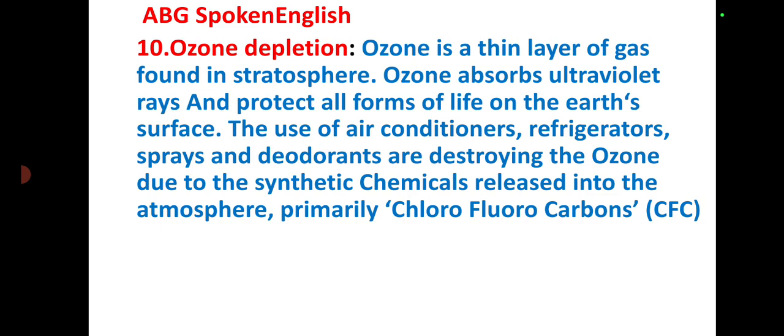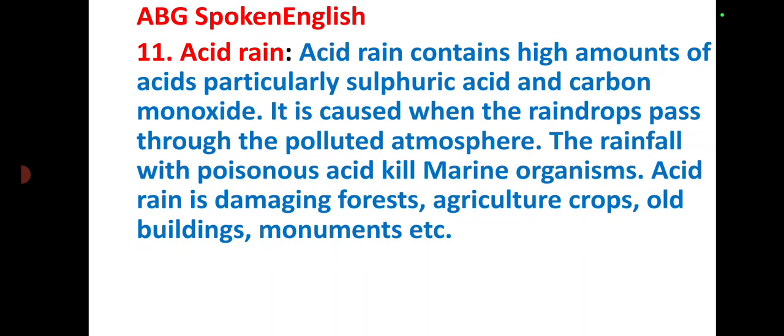Next question — Acid rain: Acid rain contains a high amount of acids, particularly sulfuric acid. It is caused when raindrops pass through a polluted atmosphere. The rainfall with poisonous acid kills marine organisms. Acid rain is damaging forests, agricultural crops, old buildings, and monuments.